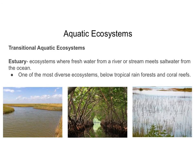An estuary is an ecosystem where freshwater meets saltwater — such as where a river or stream meets the ocean. This is one of the most diverse ecosystems, just below tropical rainforests and coral reefs. Because of this mix of freshwater and saltwater, estuaries support a large variety of organisms.